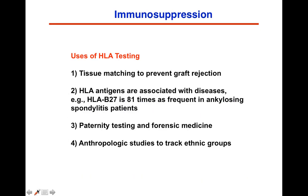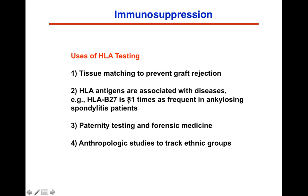HLA antigens are also associated with some diseases. For example, if you express HLA-B27 — and the 27 is the polymorphism — if you have that, you're 81 times more likely to get ankylosing spondylitis. So some diseases, particularly autoimmune-based diseases, are actually associated with specific HLA types.